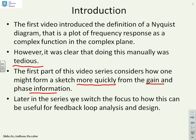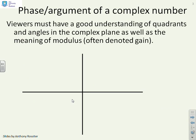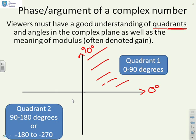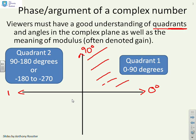First, let's look at what we mean by phase of a complex number. Viewers need to have a good understanding of quadrants and angles in the complex plane. Let's start with quadrant one. Quadrant one is this box here — the positive real axis has an argument of zero degrees and the positive imaginary axis has an argument of 90 degrees. So anything between 0 and 90 degrees is considered as quadrant one. Quadrant two takes you from 90 to 180 degrees — here's this box here.